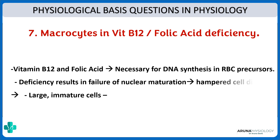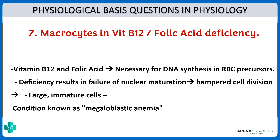The failure of DNA synthesis causes failure of nuclear maturation, resulting in hampered cell division — mitosis does not take place properly — and thus larger, immature cells are produced. These are called megaloblasts, which is why this condition is called megaloblastic anemia. The cells are big and the nucleus is insufficiently matured.